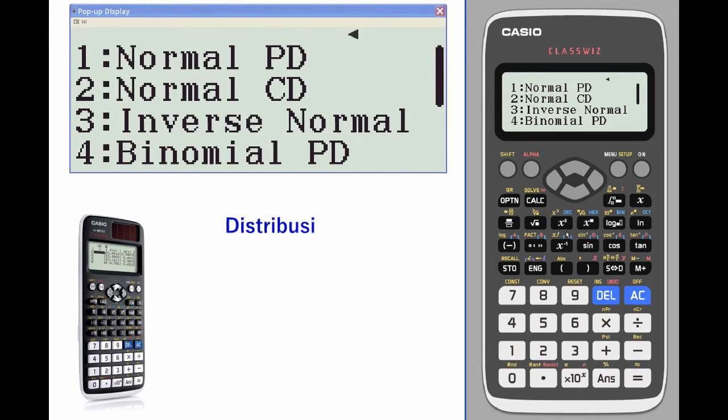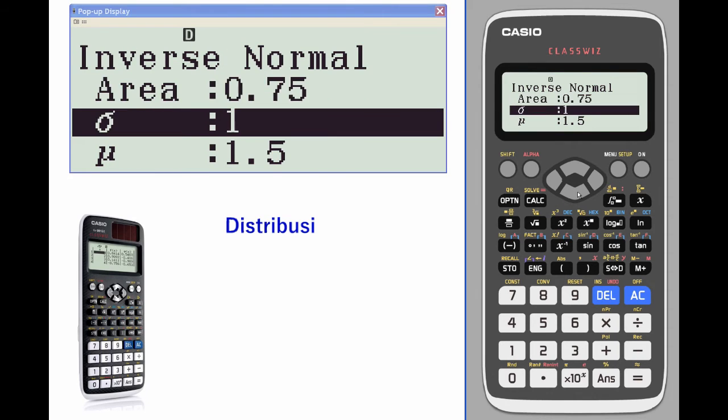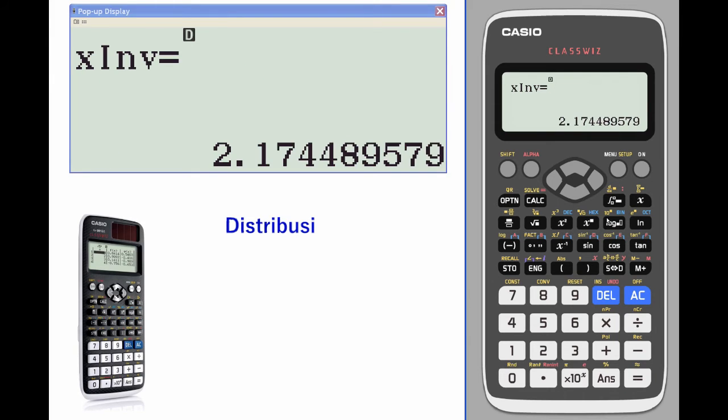Let's select a different type. We'll do an inverse normal calculation. Given an area of 0.75 with a mean of one, standard deviation of 1.5, this is looking at area to the left. So what value, what z-score will that generate? It gives you 2.17.